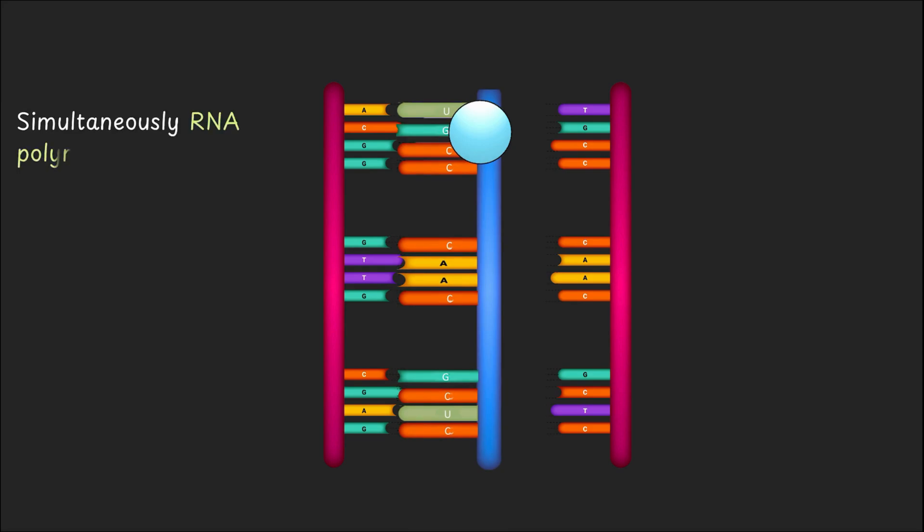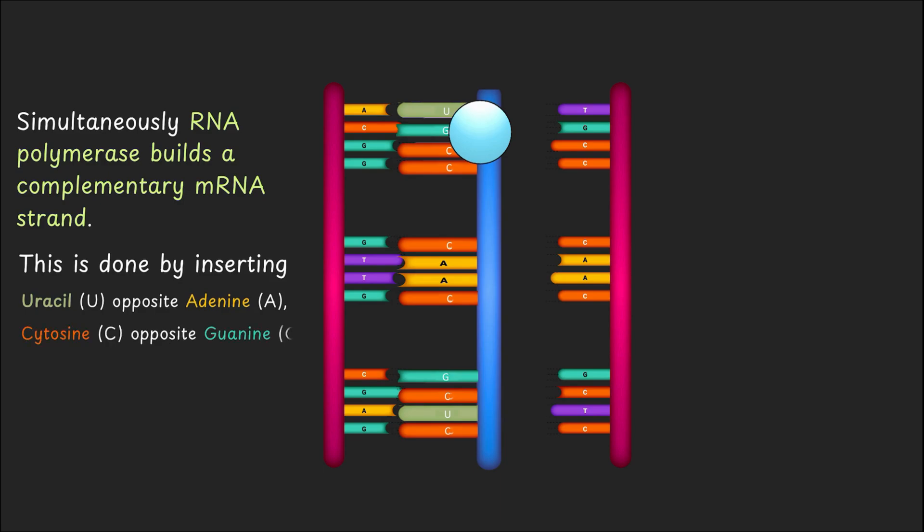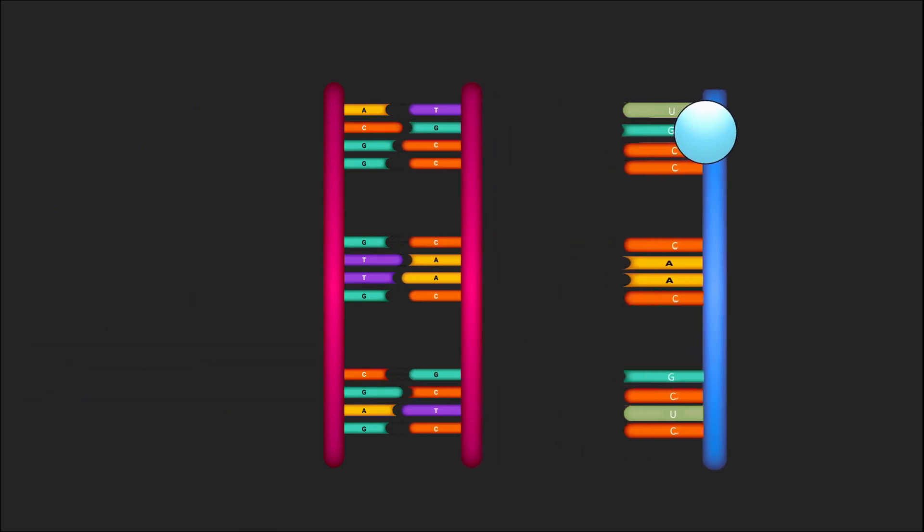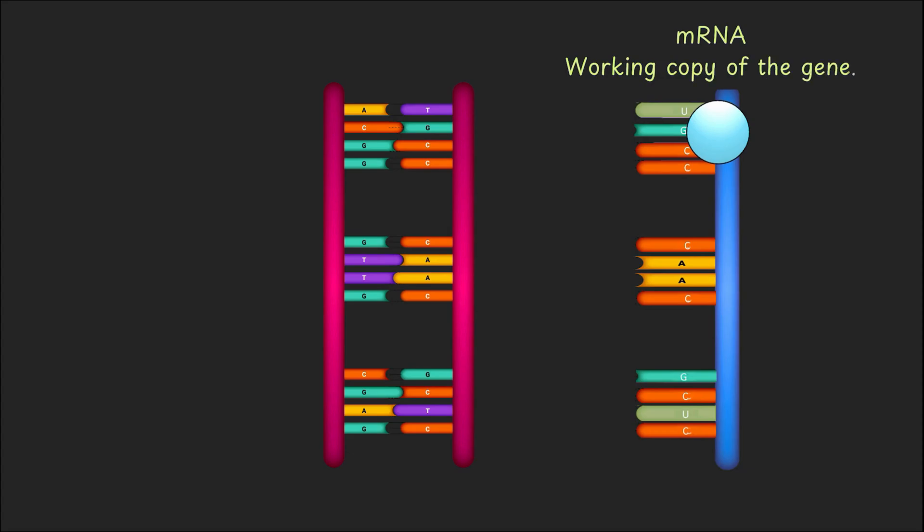And this is done by inserting uracil opposite adenine, cytosine opposite guanine, adenine opposite thymine, and guanine opposite cytosine. And this new strand that is formed, this is our mRNA, a working copy of our gene.